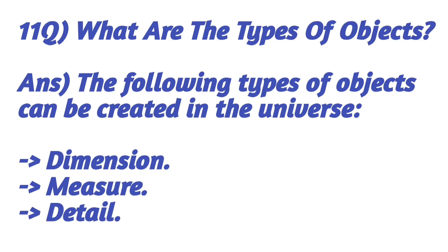What are the types of objects? The following types of objects can be created in the universe: dimension, measure, and detail.